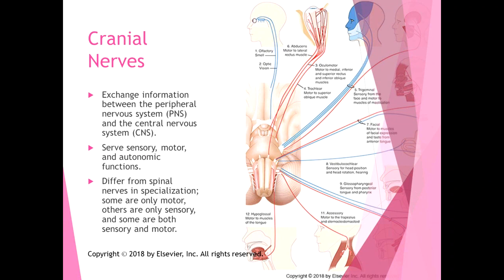There's tons of interesting stuff that the cranial nerves do and tons of interesting information in the chapter, but we are not going to cover that in this course. Basically, the cranial nerves all originate from the brainstem. They are the somatic and autonomic nerve system for the head. They exchange information between the peripheral nervous system and the central nervous system, serving sensory, motor, and autonomic functions. They differ from spinal nerves in specialization — some cranial nerves are only motor, some only sensory, and some are both, with some also including autonomic fibers.